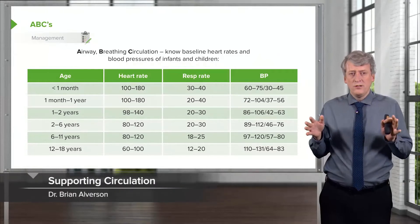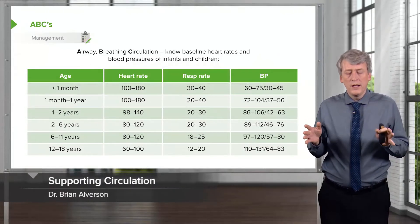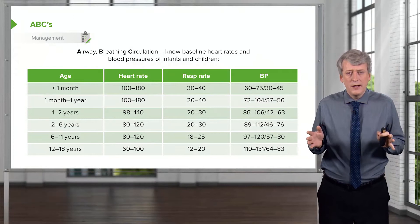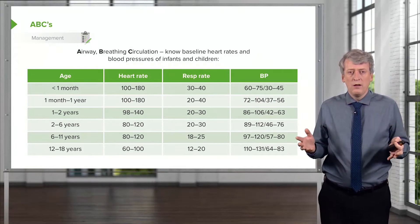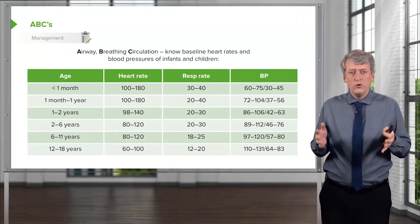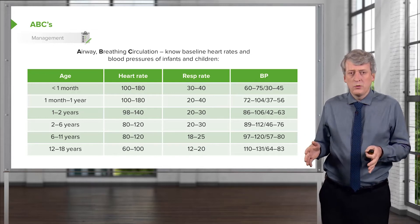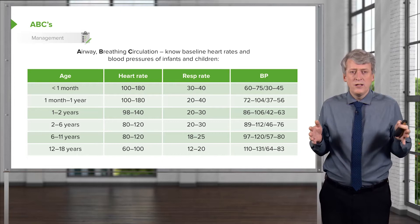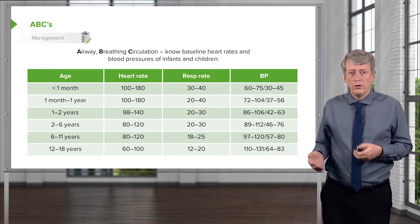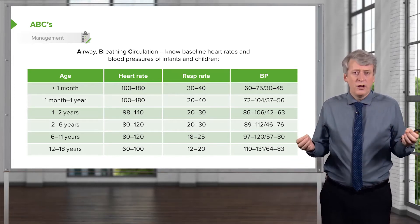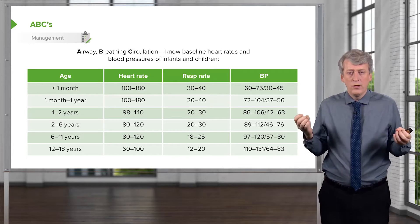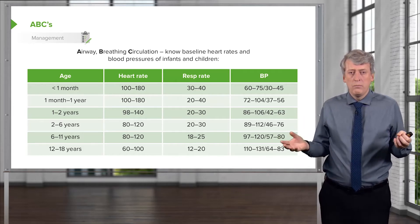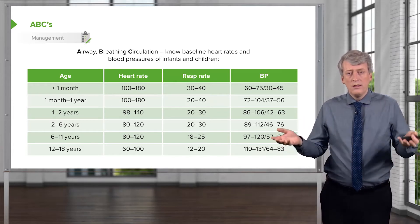Memorizing these vital signs is not important, but I bring it up to remind you that in pediatrics we have the unique problem of needing to know what is a normal heart rate, a normal respiratory rate, and a normal blood pressure for infants and children as these numbers change as we get older. So younger infants generally have a higher heart rate and respiratory rate and a lower blood pressure as a normal value than older kids.